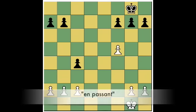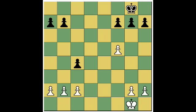Today we're going to review how the en passant pawn capture works. En passant is French for 'in passing,' and basically the capture works by your pawn capturing a pawn that happens to be passing by a square that you could normally capture on.